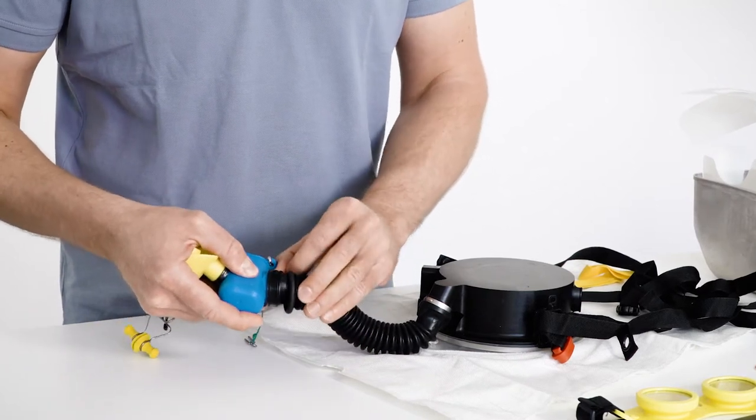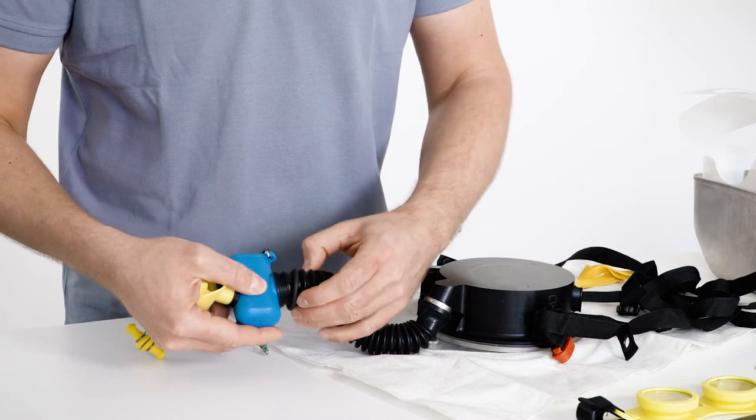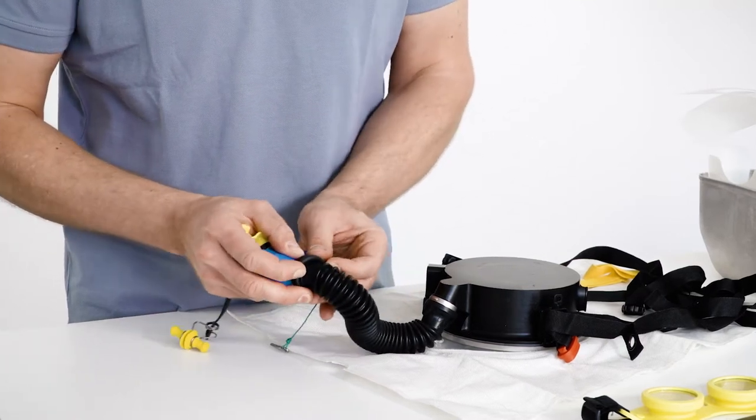Attach the breathing hose to the training heat exchanger. Push the O-ring of the breathing tube onto the heat exchanger.